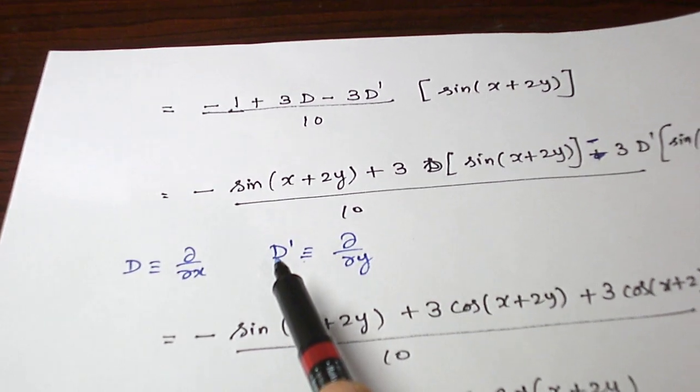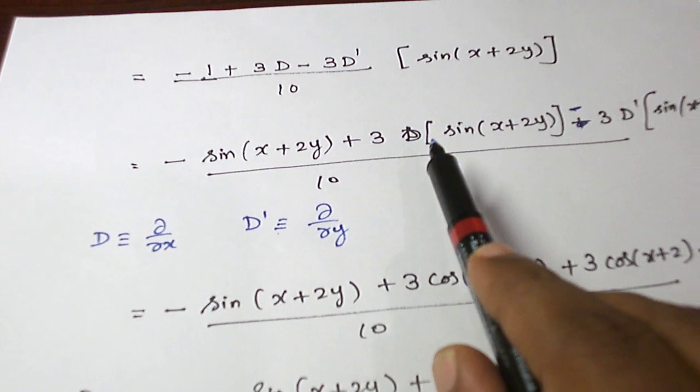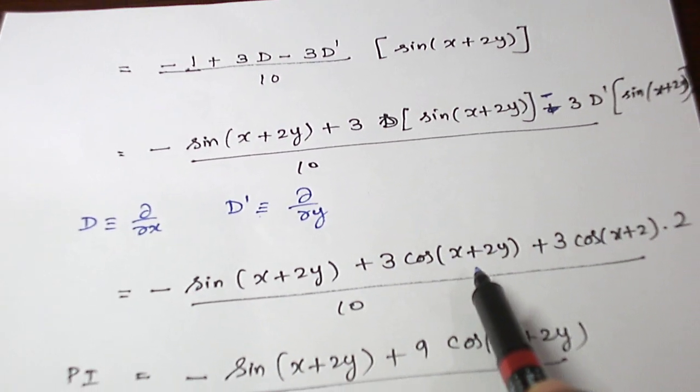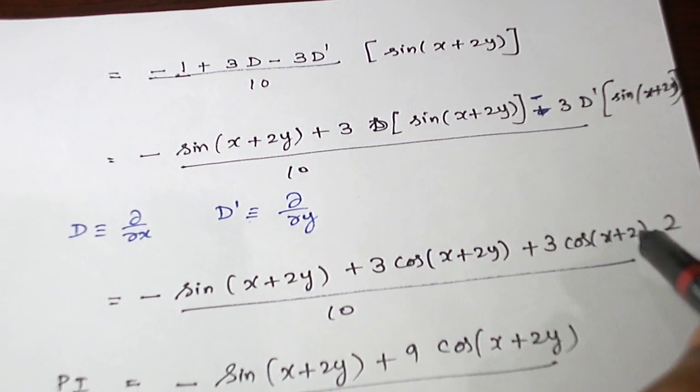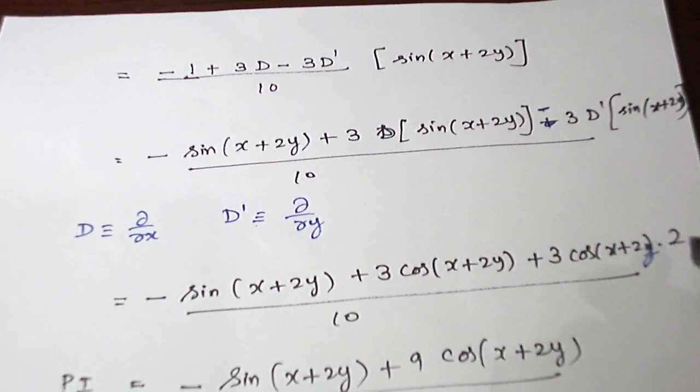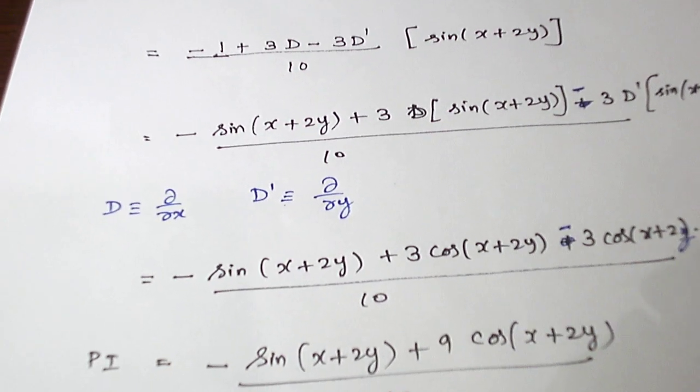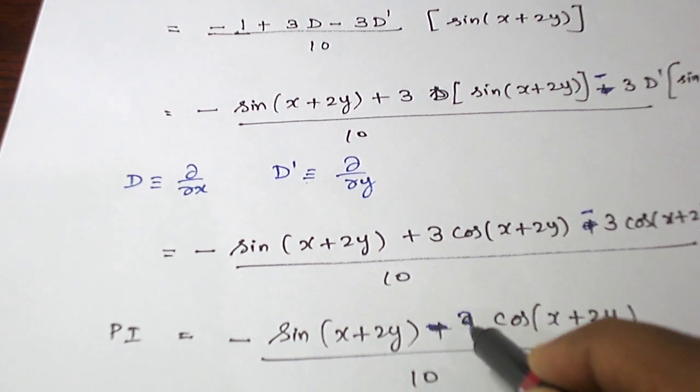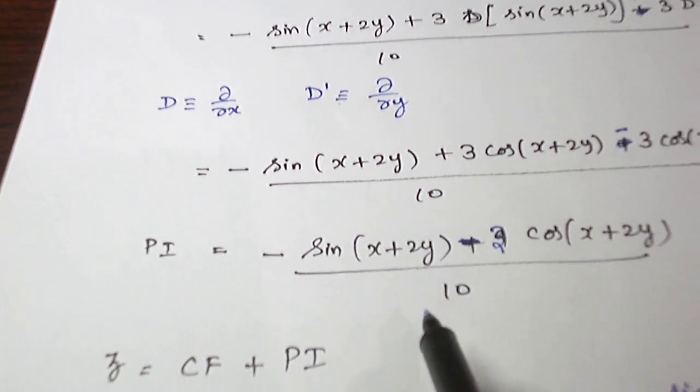So d is partial differentiation with respect to x, d dash is partial differentiation with respect to y. So when we differentiate sine, we will get cos of x plus 2y. And here, when we differentiate sine with respect to y, cos of x plus 2y into 2. And here is a minus sign. So minus 6 plus 3, it is minus 3. And this minus sine of x plus 2y will come as usual without any change.